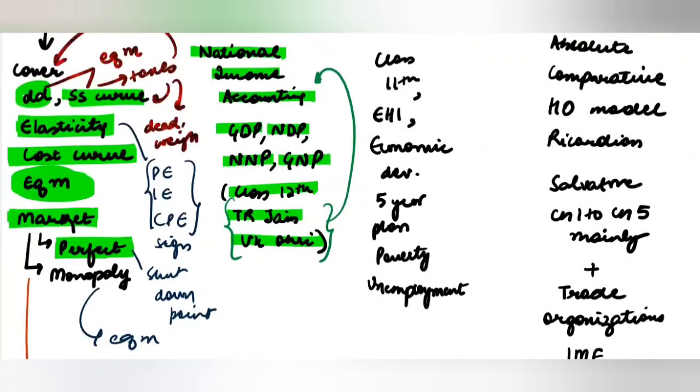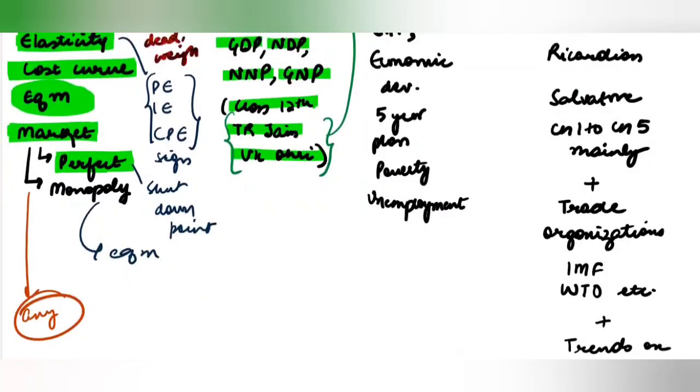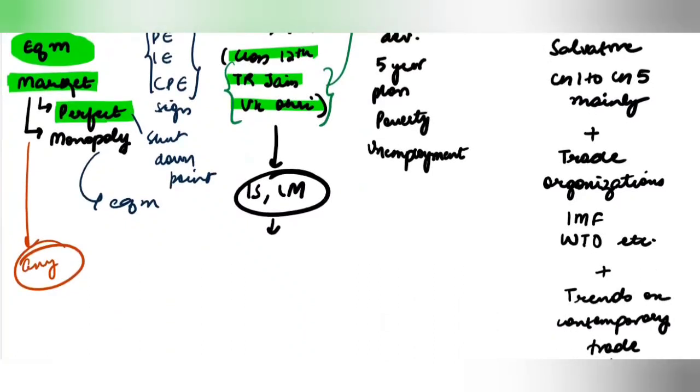Other than that, you should be focusing very less on the equilibrium conditions. So not much of ISLM will come in this exam. Very less of ISLM. But you should know the basic expenditure equation. Y is equal to C plus I plus G plus NX.